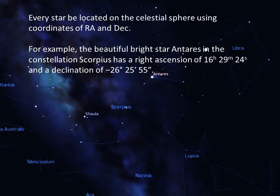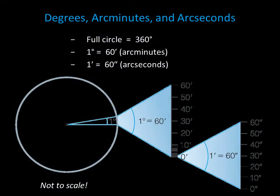For example, the bright star Antares in the constellation of Scorpius has a right ascension of 16 hours, 29 minutes, and 24 seconds, and a declination of minus 26 degrees, 25 arc minutes, and 55 arc seconds. To measure more precisely than a degree, we subdivide each degree into 60 arc minutes and each arc minute into 60 arc seconds. An arc minute is denoted with a single tick, and an arc second is denoted with a double tick.